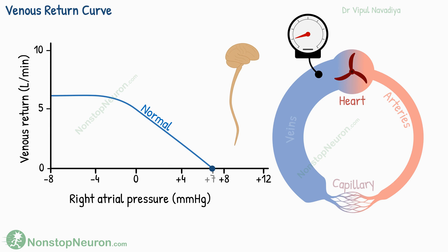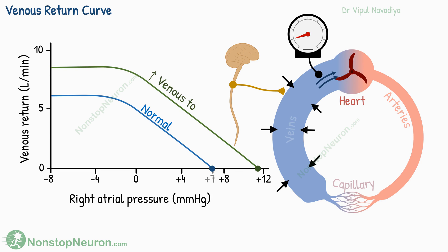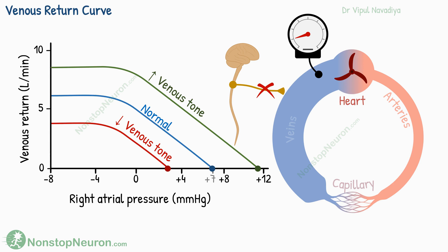Now let's talk about the effect of changing the tone of blood vessels, starting with the veins. With increasing sympathetic tone, the veins compress the blood inside, increasing the baseline pressure and venous return for all levels of right atrial pressure — the curve shifts up. Increasing venous tone is similar to increasing blood volume, but the mechanism is different. Decreasing venous tone has the opposite effect: mean systemic filling pressure decreases and venous return falls at all right atrial pressure levels, similar to a decrease in blood volume.